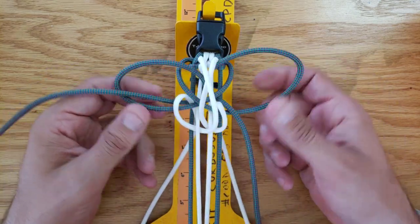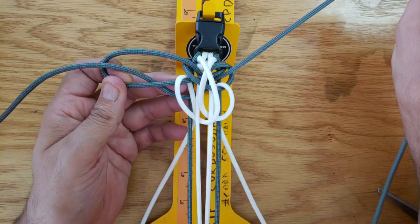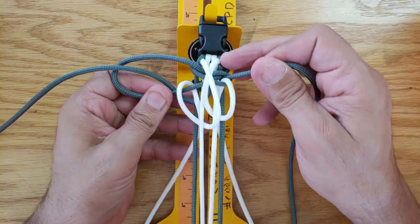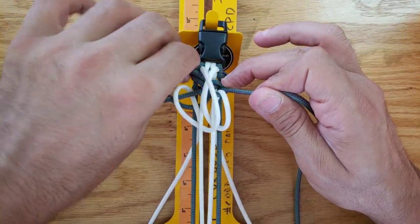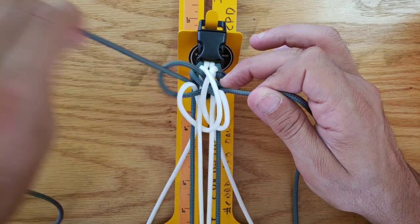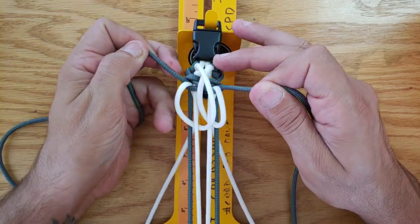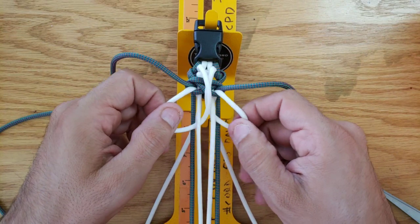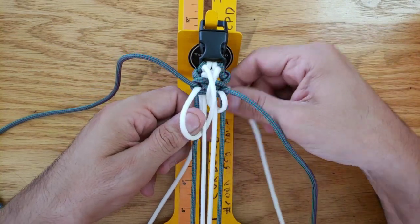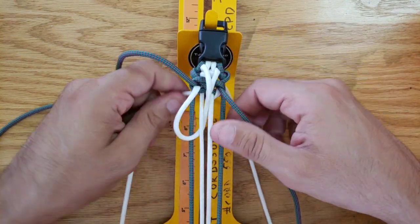Then pull all your slack out, tighten up the starting cord, and then close up the central cord.